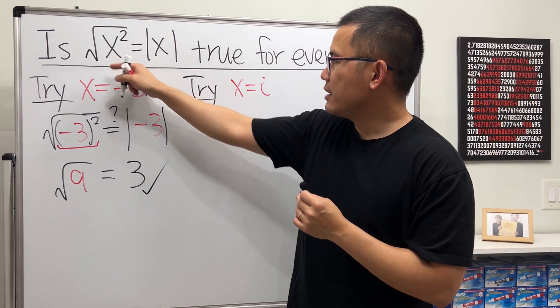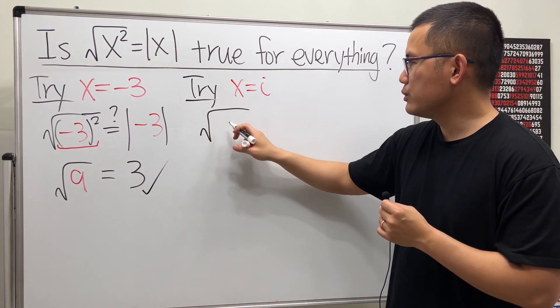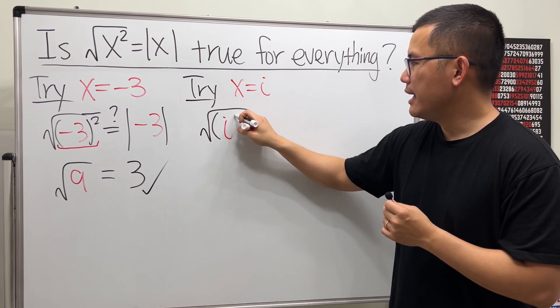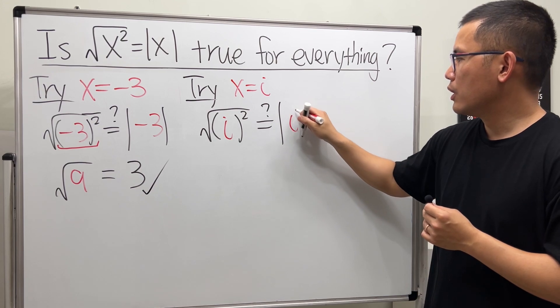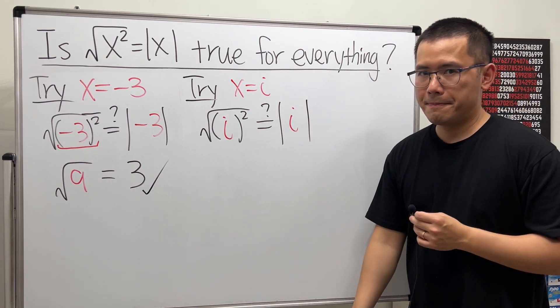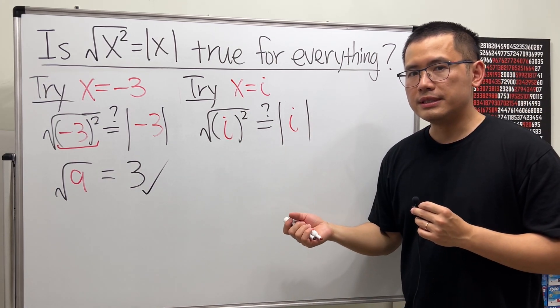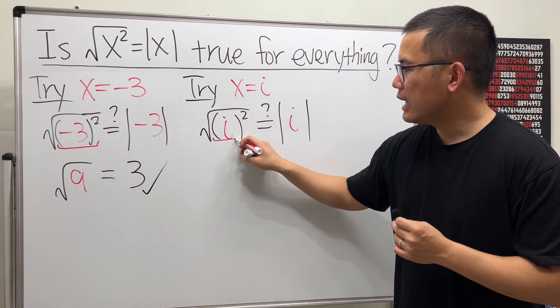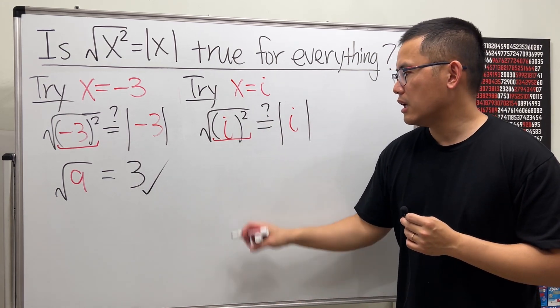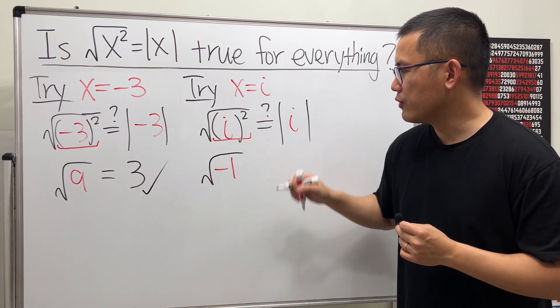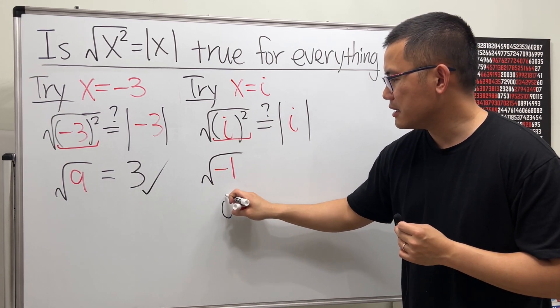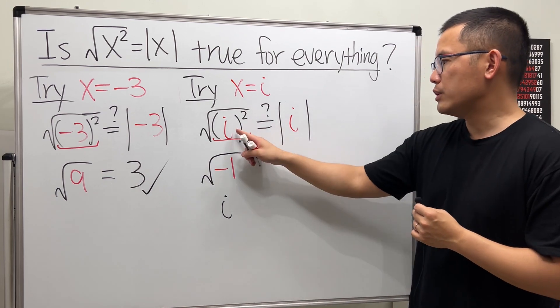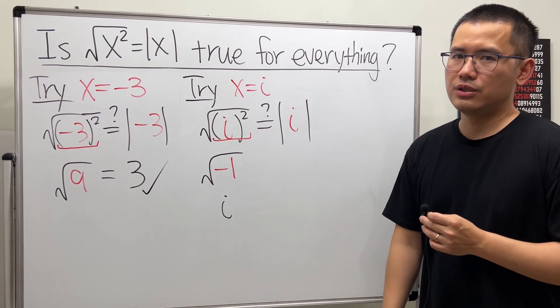Plugging the i in here, we are looking at square root of i squared. Is this true? Right here on the left hand side, we do this inside out, right? i squared by definition is negative 1, and then we take the square root for that. Then square root of negative 1, that is i. So it looks like we just get the i back. Good.